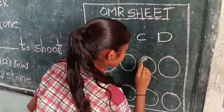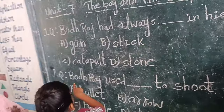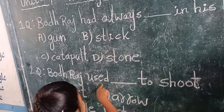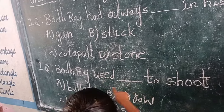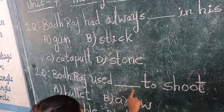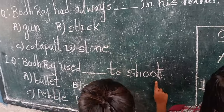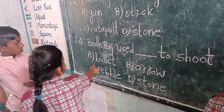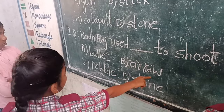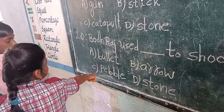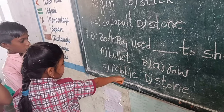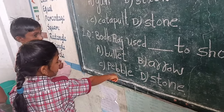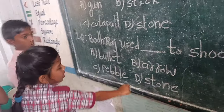Next. Second question. What is a slingshot used to shoot? Option A, bullet. Option B, arrow. Option C, pebble. Option D, stone. Find out answer. Option C, pebble is right.